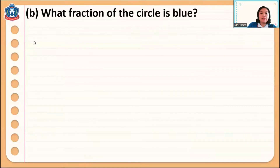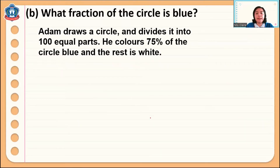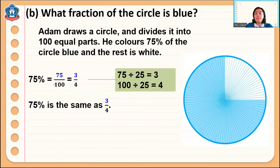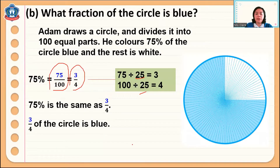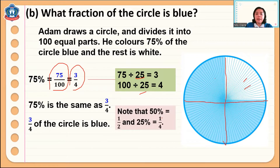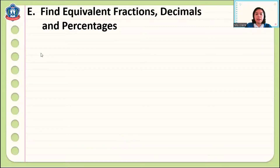Next: what fraction of the circle is blue? Adam draws a circle and divides it into 100 equal parts. He colors 75 percent of the circle blue and the rest is white. So 75 percent means 75 out of 100. If we reduce this to its simplest fraction, it is equal to 3 quarters by dividing both by 25. So 75 percent is the same as 3 quarters. Note also that 50 percent is equal to one half, and 25 percent is equal to one quarter — always remember this.